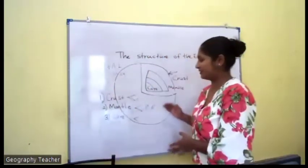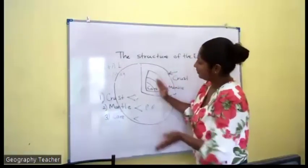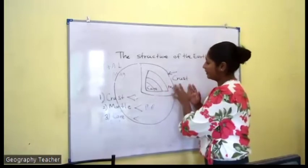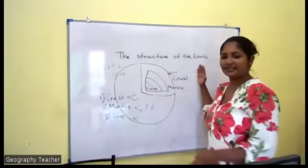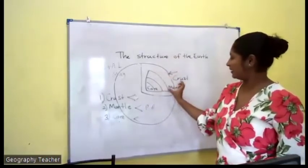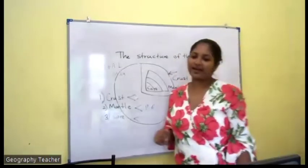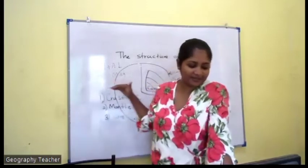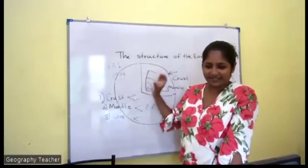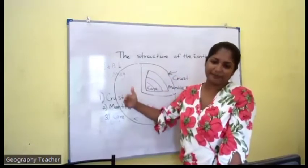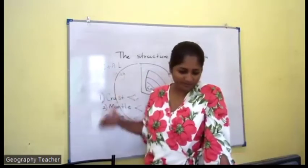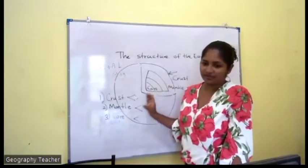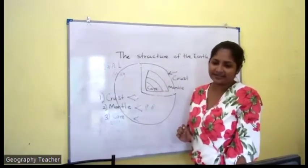The location of the mantle is between the crust and the core. The upper part of the mantle consists of olivine and silicate; the lower mantle consists of magnesium and silicate. Between the mantle and the core there is the Gutenberg discontinuity.